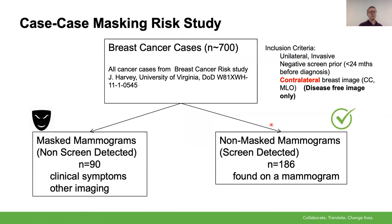A lot of the work we built is to develop a masking index, and Sarah's going to talk about that after us. This was based on an original collaboration with the University of Virginia with Dr. Jennifer Harvey. We have a fairly small data set of about 700 cancers, of which 90 were identified as masked — meaning they weren't found on the mammogram — and 186 were confirmed to be found on the screening mammogram.